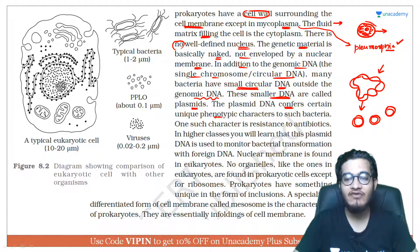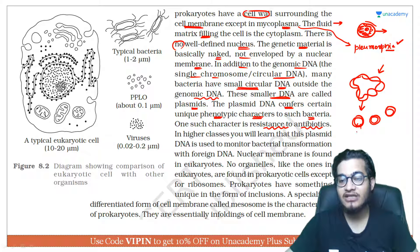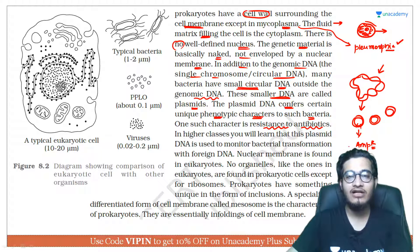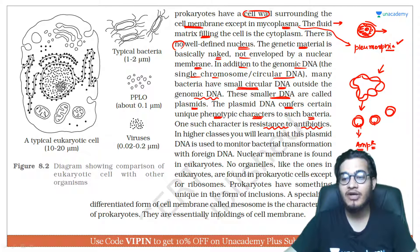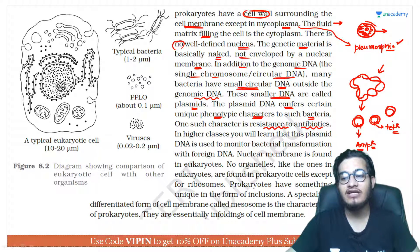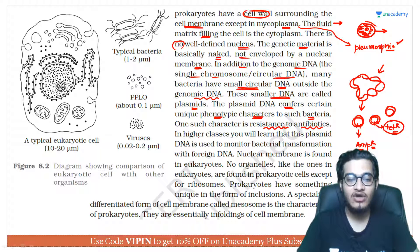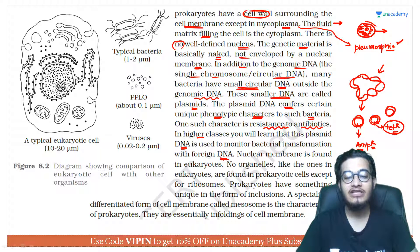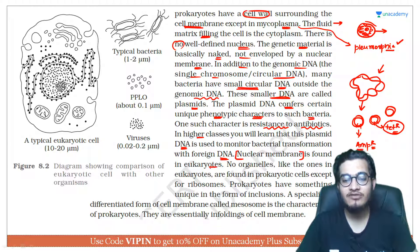Plasmids carry many important characters in bacteria, such as antibiotic resistance. For example, if the plasmid contains a gene for ampicillin resistance, then adding ampicillin to the bacteria will have no effect — the bacteria becomes resistant. Similarly, if the plasmid has a tetracycline resistance gene, the bacteria will be resistant to tetracycline. In biotechnology, these plasmids act as carriers to pass foreign DNA from one organism to another.